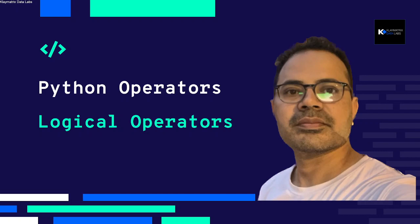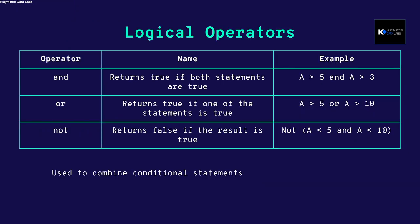Welcome to another video on Python. This time we'll talk about logical operators. We primarily have three kinds: the AND operator, the OR operator, and the NOT operator. If we have two conditions, like 'a greater than 5' and 'a greater than 3', and we want to check whether both or either condition is true, or apply a NOT gate, we use these operators.